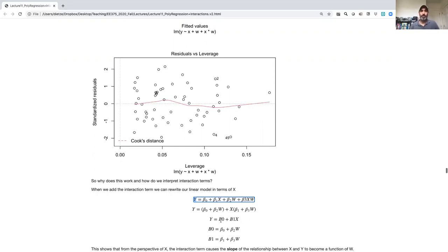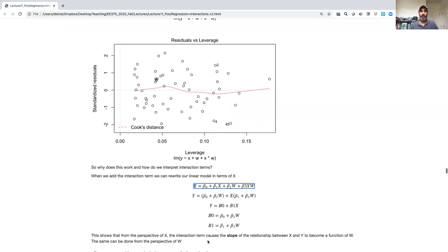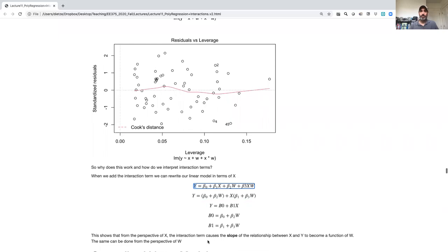So I can rewrite this as y equals b0 plus b1 x. There's a linear model between x and y, but now not only is the intercept a linear model of w, but also the slope is a linear model as well. So that's just pointing out that what you can rewrite an interaction term in terms of how one covariate affects the slope rather than just how one covariate affects the intercept.